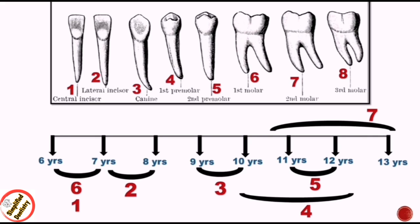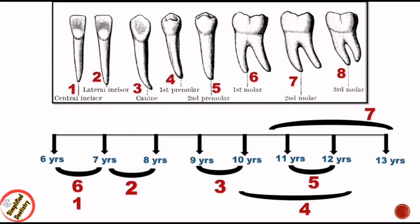So the mandibular eruption ages are: first molar and central incisor between 6–7 years, lateral incisor between 7–8 years, canine between 9–10 years, first premolar between 10–12 years, second premolar between 11–12 years, and second molar between 11–13 years. Mandibular third molars also do not erupt until age 17 or later, typically between 17 to 21 years.